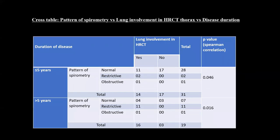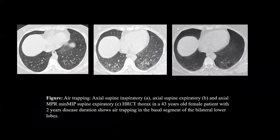This cross-table shows the correlation between spirometry results and lung involvement on HRCT Thorax in both early and late disease groups. The correlation between HRCT Thorax findings and pattern of spirometry is more significant in the late disease group.